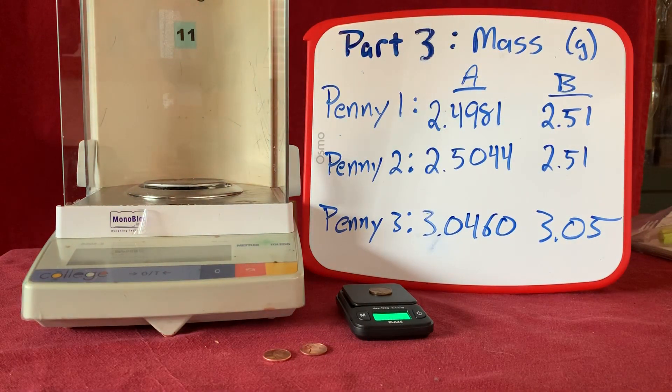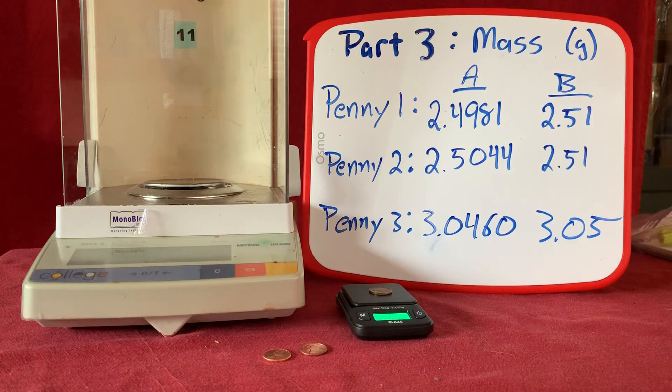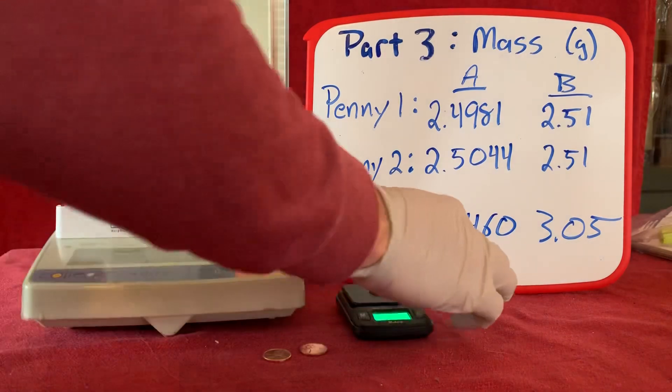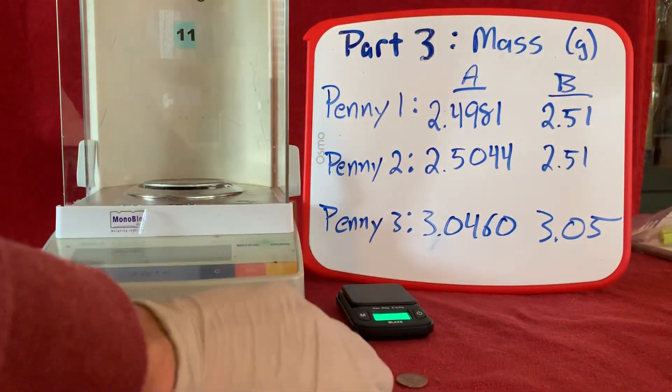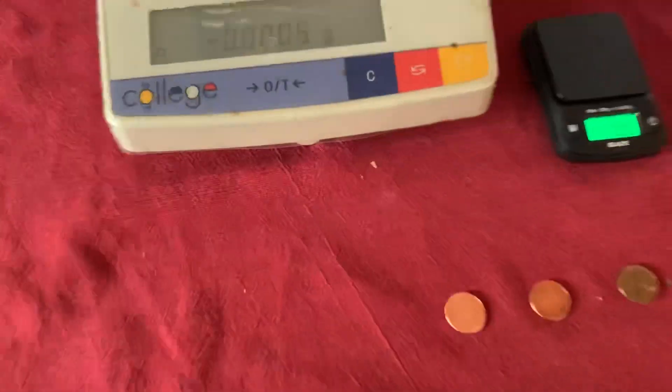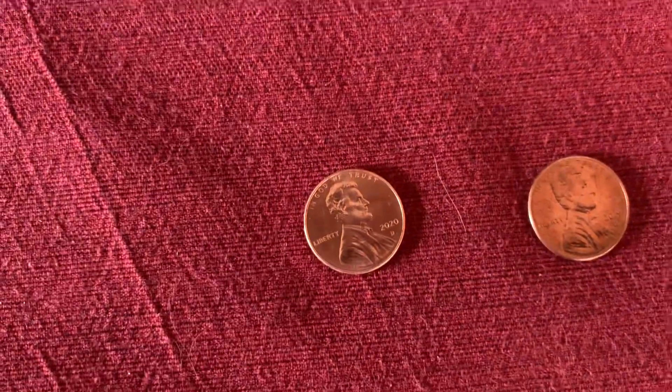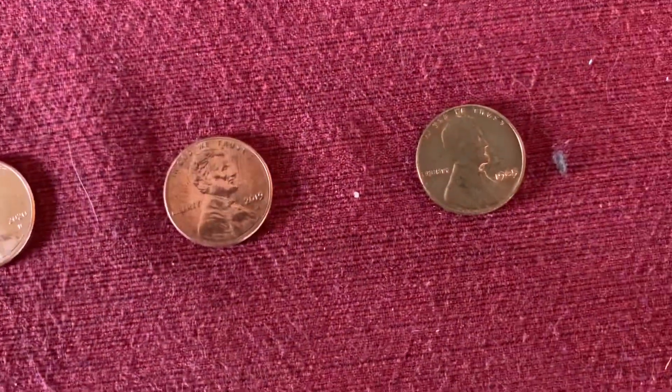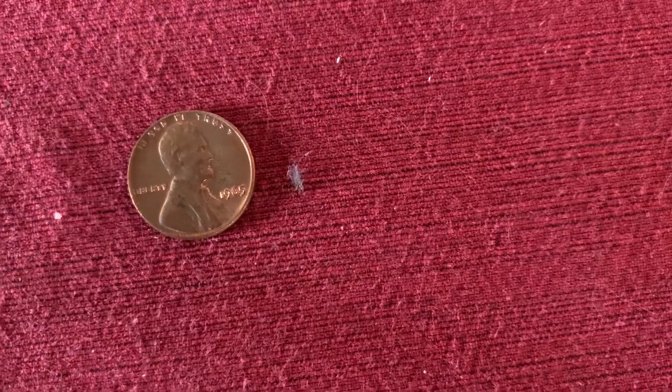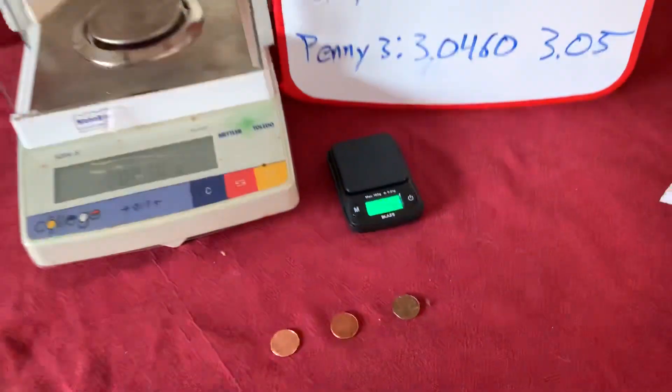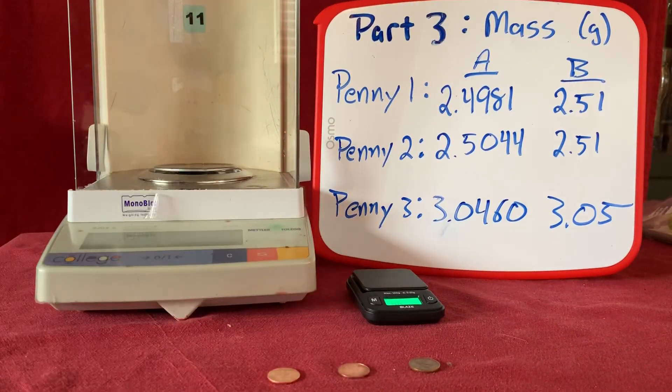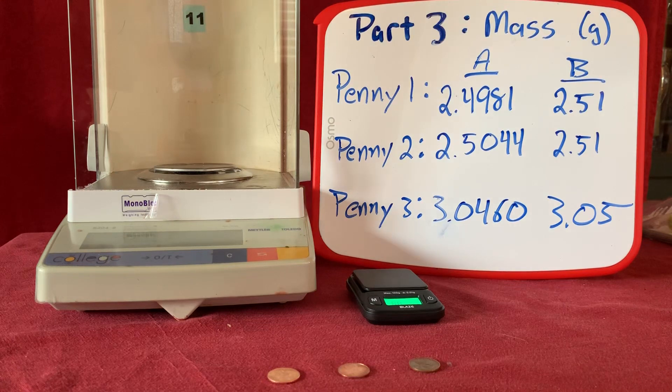Now if you look at our data, you might notice that there seems to be a particular discrepancy between pennies 1 and 2 and penny 3. Notably, penny 3 has a mass of about 3 grams, while pennies 1 and 2 only have a mass of 2.5 grams. Let's take a closer look at these three pennies. Here's penny 1, here's penny 2, and here's penny 3. I'll leave it to you to hypothesize and or determine why penny 3 shows a noted mass difference from penny 1 and penny 2.